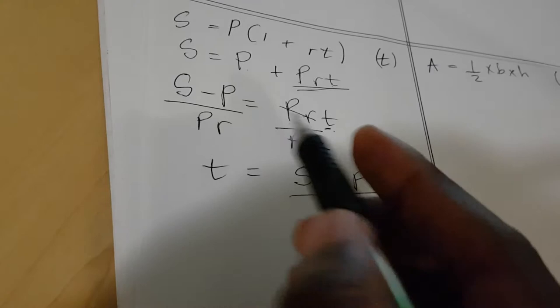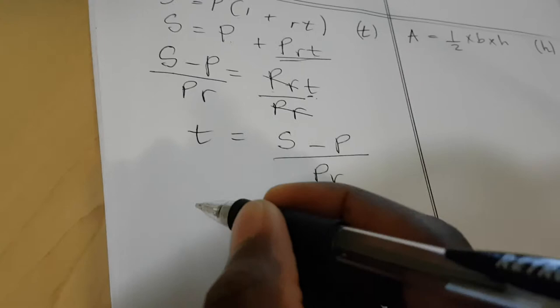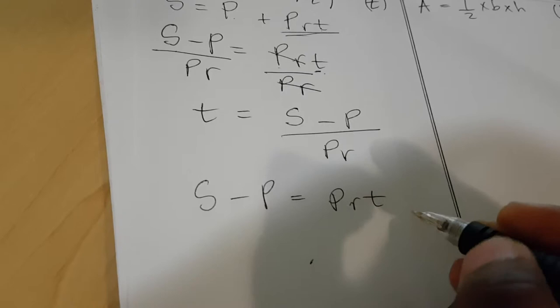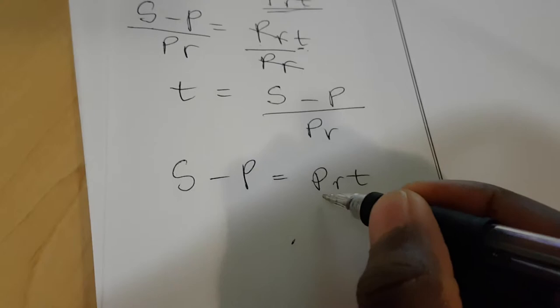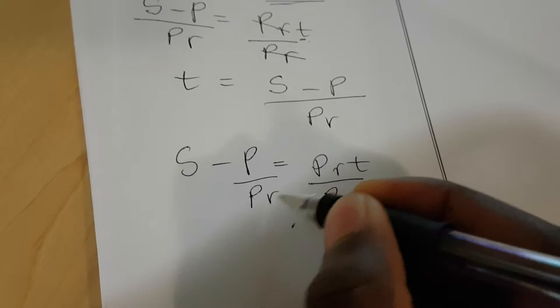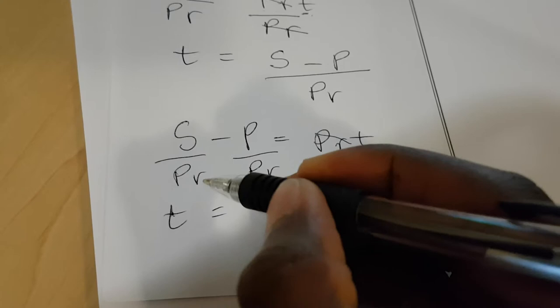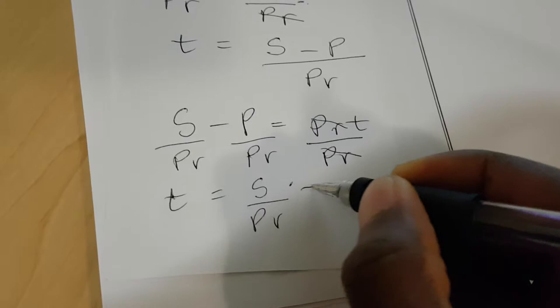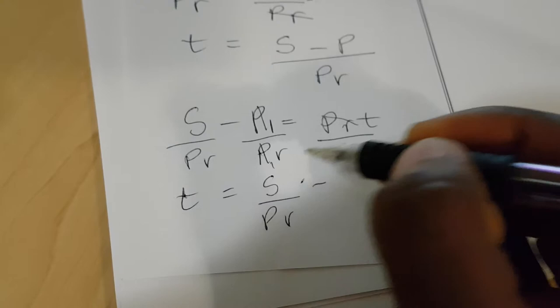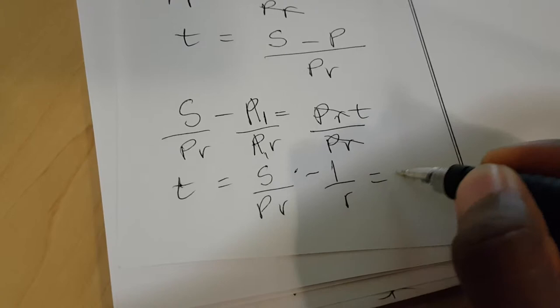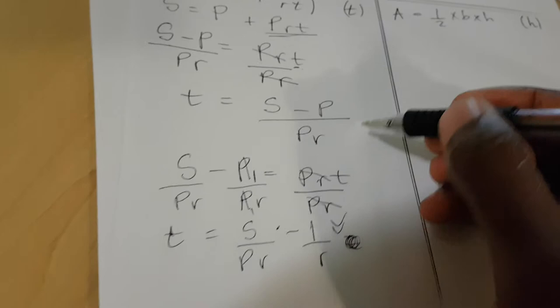You can also think of it this way: at the stage where s − p = prt, instead of dividing both sides by pr together, you divide each term individually by pr. So pr and pr cancel, giving t = s/(pr) − p/pr. Since p/pr simplifies to 1/r, you get t = s/(pr) − 1/r. Both forms are valid answers.